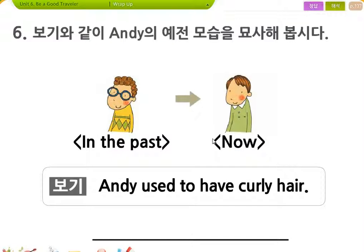보기와 같이 Andy의 예전 모습을 묘사해봅시다. 예전에 어땠어? 지금 어떠고? 차이가 뭐야? 안경, 헤어스타일. In the past, now. Andy used to have curly hair. Curly, 곱슬이.